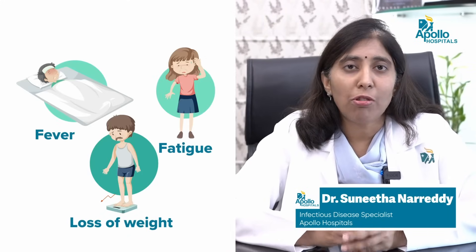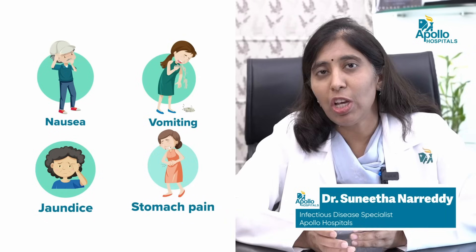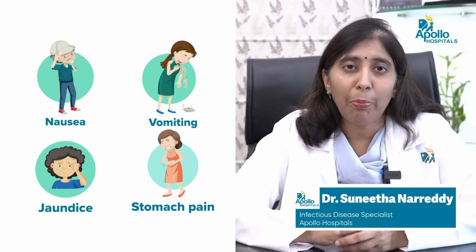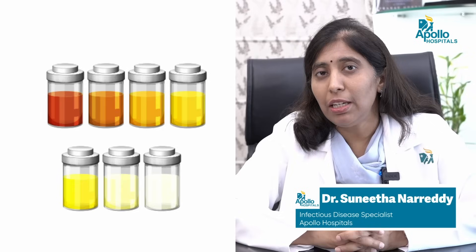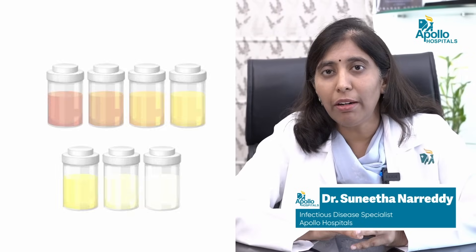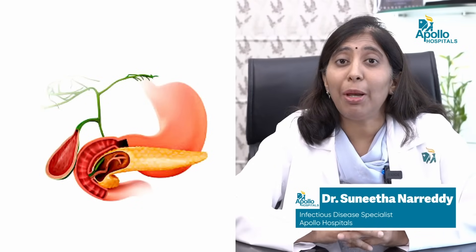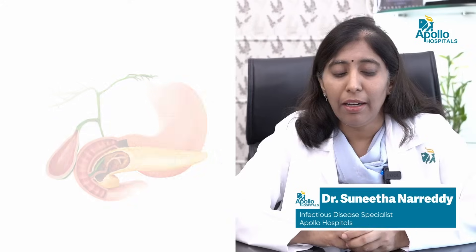In the acute infection for Hepatitis B, you have symptoms like fever, fatigue, loss of weight, nausea, vomiting, jaundice, and stomach pain or abdominal pain. Urine can become dark in color, like orange to yellow in color.